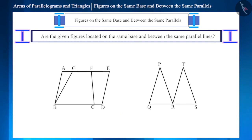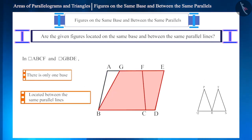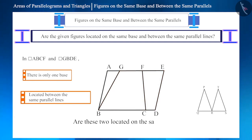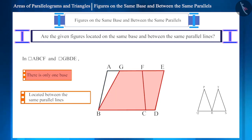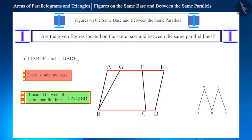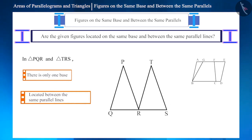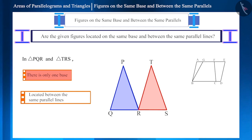Now let's see some more figures. In the first figure, parallelogram ABCF and parallelogram GBDE — are they located on the same base? No. The base of parallelogram ABCF is BC and the base of parallelogram GBDE is BD. But the two parallelograms are located between the same parallel lines AE and BD, though they don't have the same base. Similarly, in the second figure the two triangles do not have the same base, but they are located between the same parallel lines PT and QS.